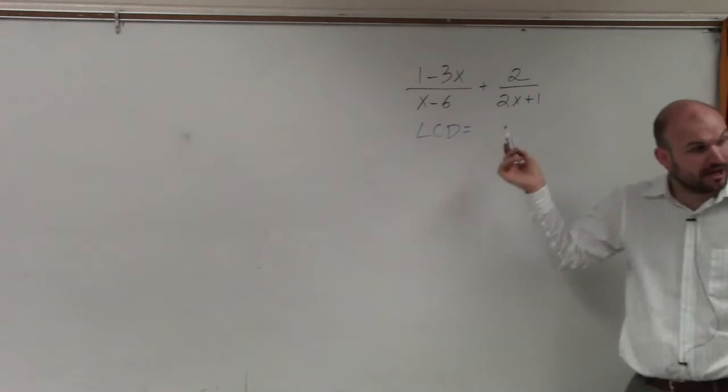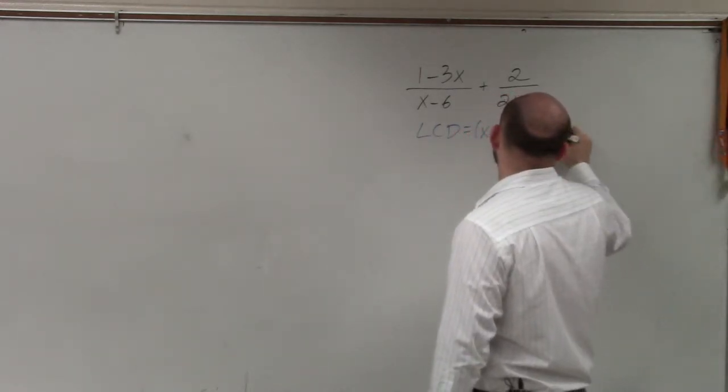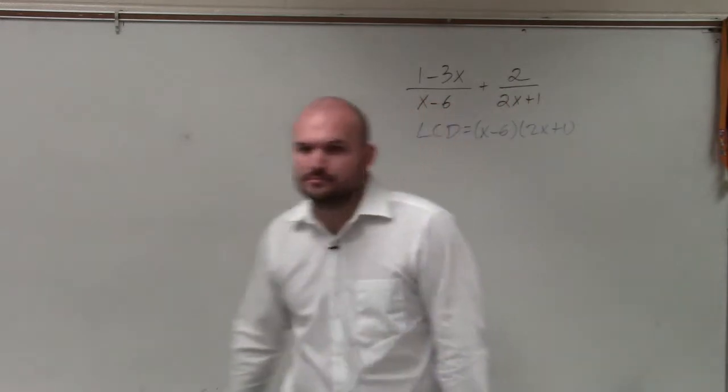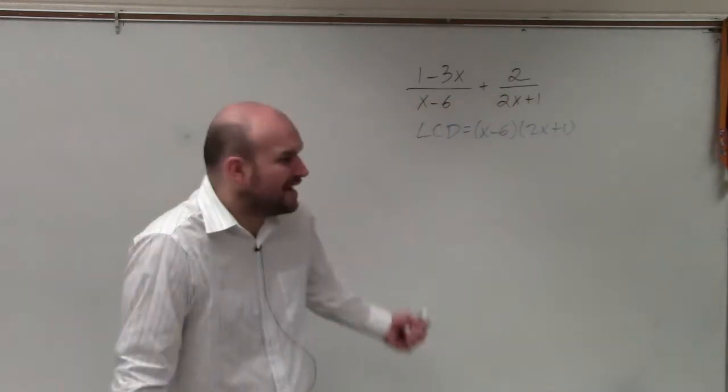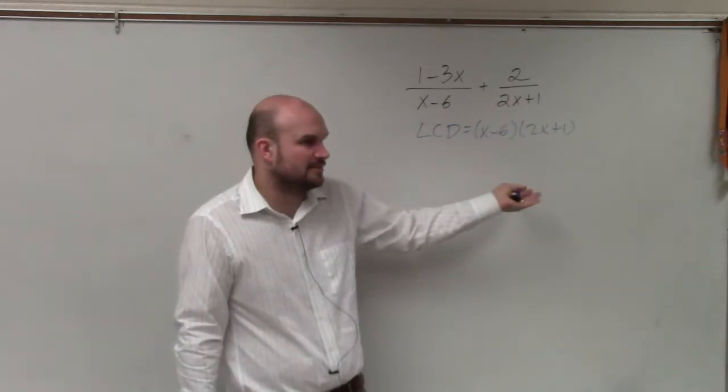And again, here, we see that they have no common elements. So we're just going to take their product, which would be x minus 6 and 2x plus 1. So really, identifying the LCD, I actually think when you have expressions, when you don't have any common elements, it can actually be fairly simple. You're just taking the product.